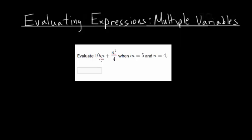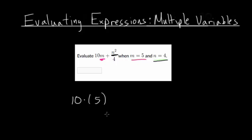Let's start this problem. We know that m is 5 and n is 4. Let me color code this: for m, anywhere we see m, we're going to replace it with 5. And anywhere we see n, we're going to replace it with 4. My recommendation is when you're substituting a number for a variable, put that number in parentheses. So we have 10 times m — because they're written next to each other we know we have multiplication — and m is 5, so I replace it with (5) in parentheses to remind myself to multiply. Putting it in parentheses also helps keep track of negative numbers and their signs, which helps prevent mistakes.